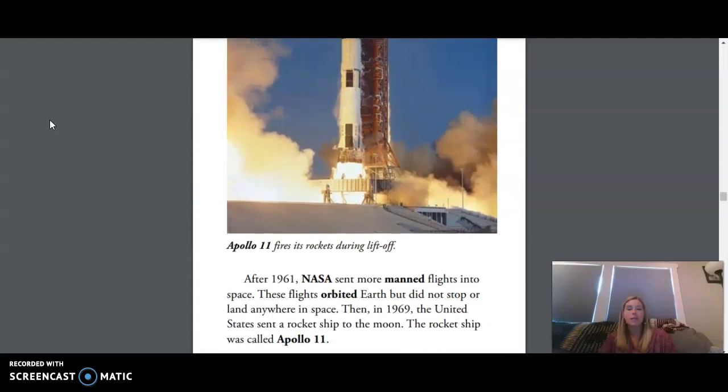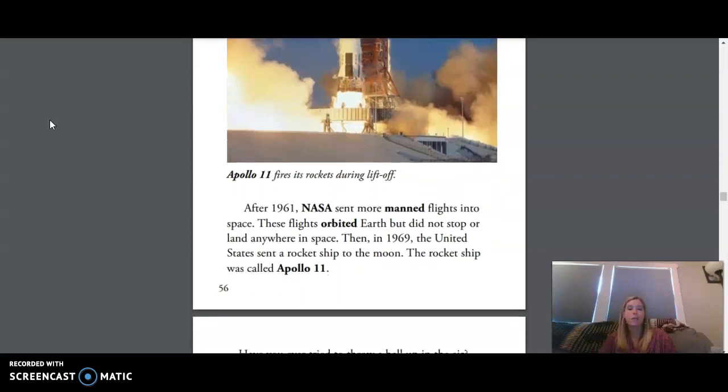After 1961, NASA sent more manned flights into space. These flights orbited Earth but did not stop or land anywhere in space. Then in 1969, the United States sent a rocket ship to the moon. The rocket ship was called Apollo 11.